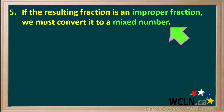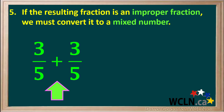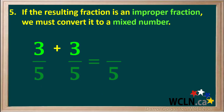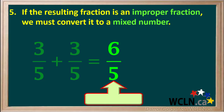The fifth thing we must consider is, if the resulting fraction is an improper fraction — that is, the numerator is larger than the denominator — then we must convert it to a mixed number. For example, let's say we're asked to add 3 fifths to 3 fifths. The denominator of the sum is 5. We add up the numerators 3 plus 3, which equals 6, so our sum is the fraction 6 fifths. But because the numerator 6 is greater than the denominator 5, this is an improper fraction, which we must convert to a mixed number.